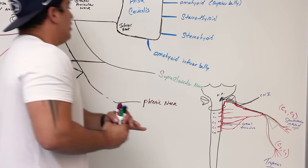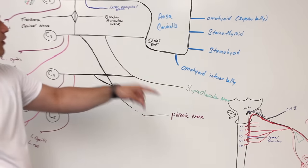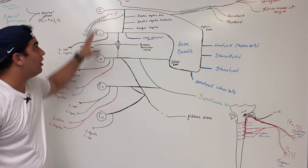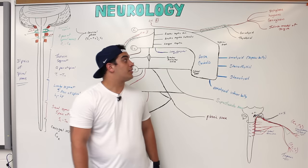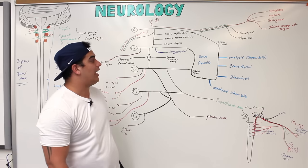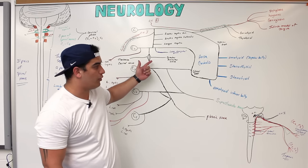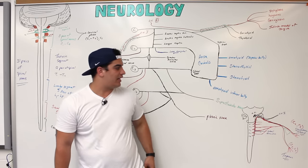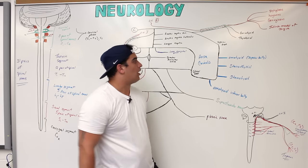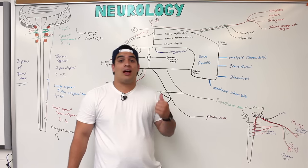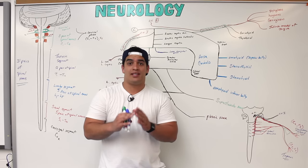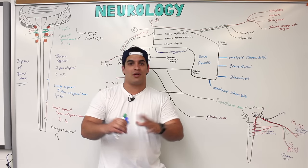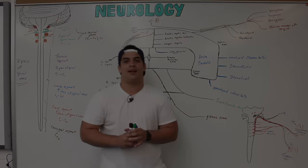So we've pretty much covered everything for the cervical plexus, going through almost every root and its connections. There are some smaller branches not discussed, but they're not as clinically significant. Alright Ninja Nerds, we covered a lot about the cervical plexus. If you enjoyed it, please hit the like button, subscribe, and put some comments in the comment section. Until next time.